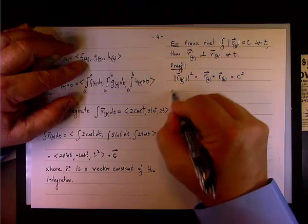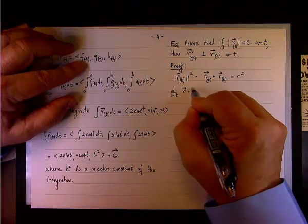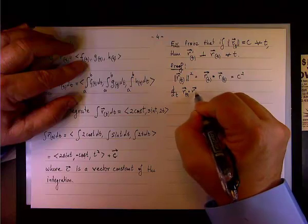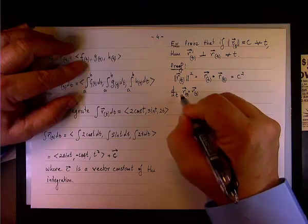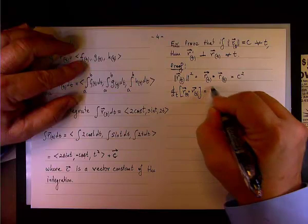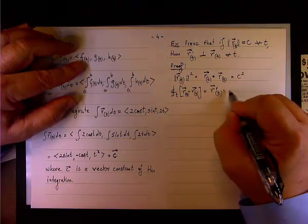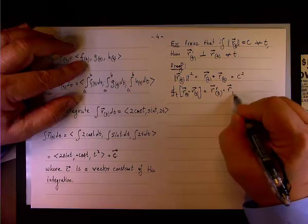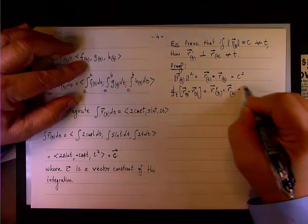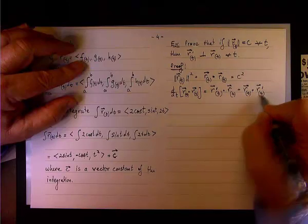Since the square of the magnitude equals c squared, we take d/dt of r dot r. Remember the property - I think property number 3 - it gives you r' dot r plus r dot r' by the chain rule.